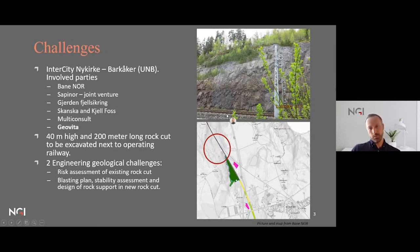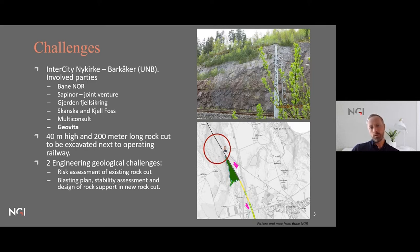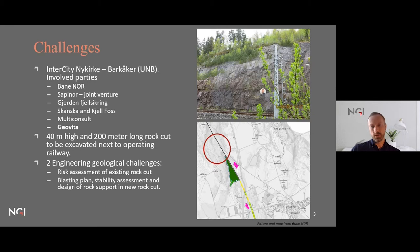The actual challenge: we are located close to the city of Horten in the southeastern part of Norway, where construction is ongoing for a new railway line that will cross the highway. Part of this new railway involves a large rock cutting where the new railway diverges from the existing one — and the existing railway must remain in operation throughout the entire construction phase. The plan is to blast into the rock mass and establish a new rock cutting roughly 40 meters high and 200 meters long, right next to the operational railway.